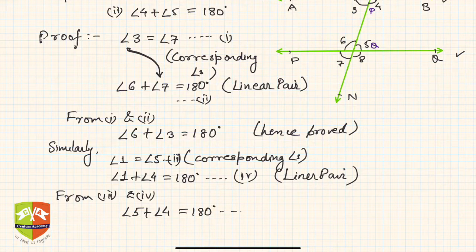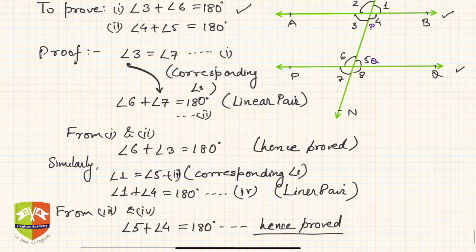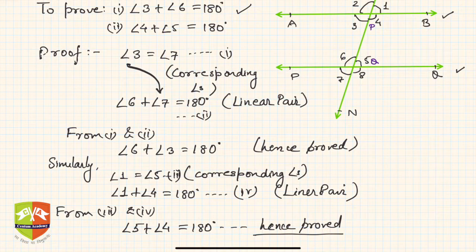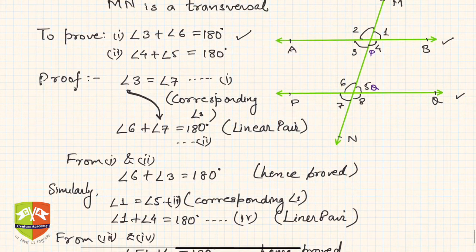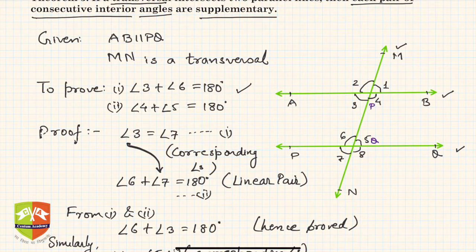Hence proved. We have shown that both pairs of consecutive interior angles are supplementary: angle 4 plus angle 5 equals 180 degrees, and angle 3 plus angle 6 equals 180 degrees.